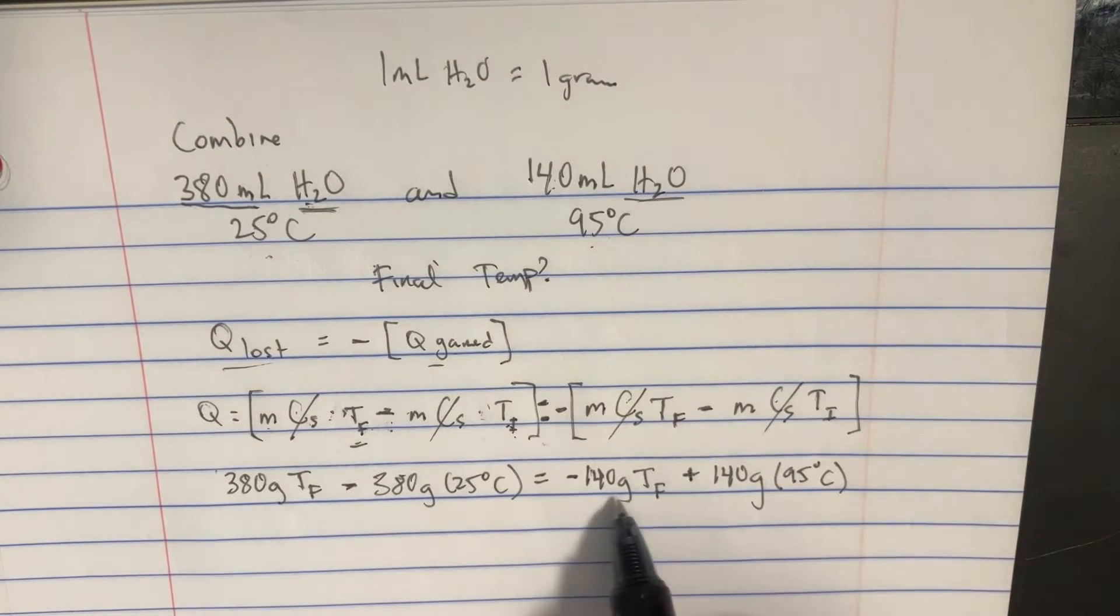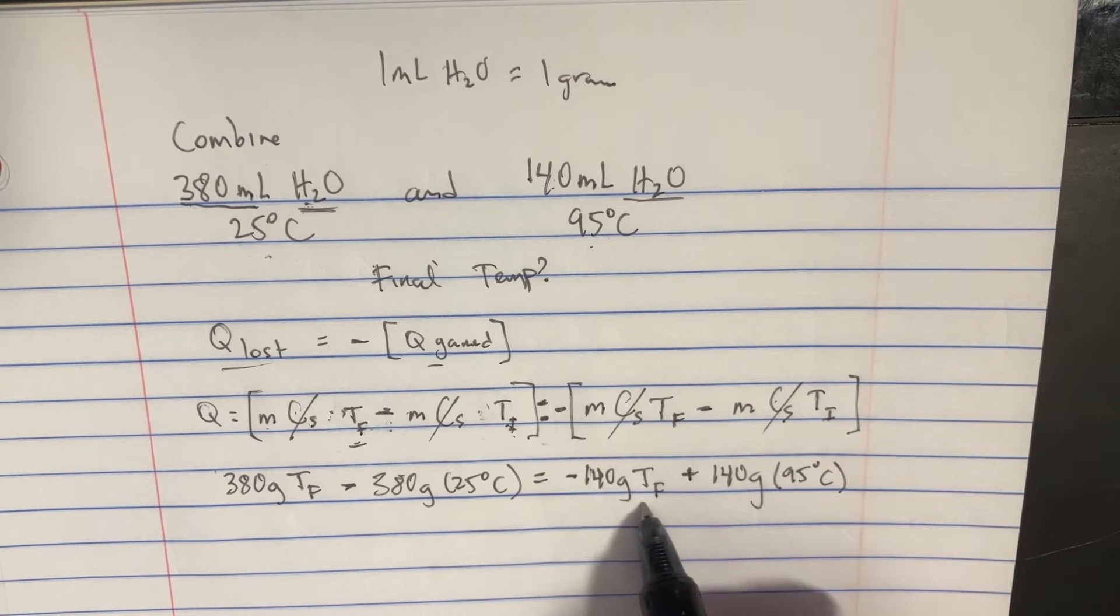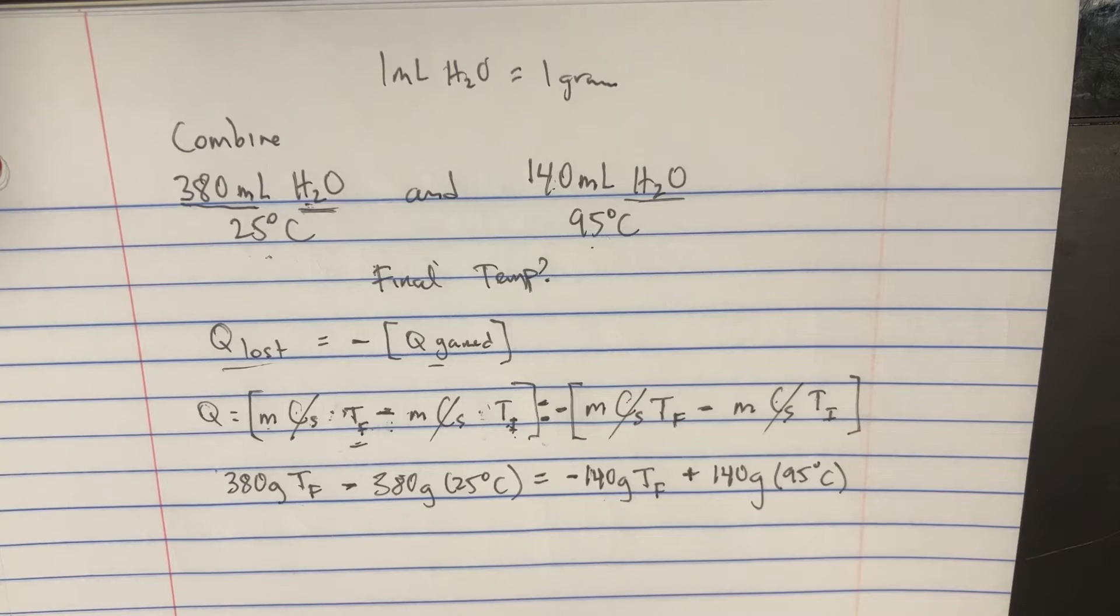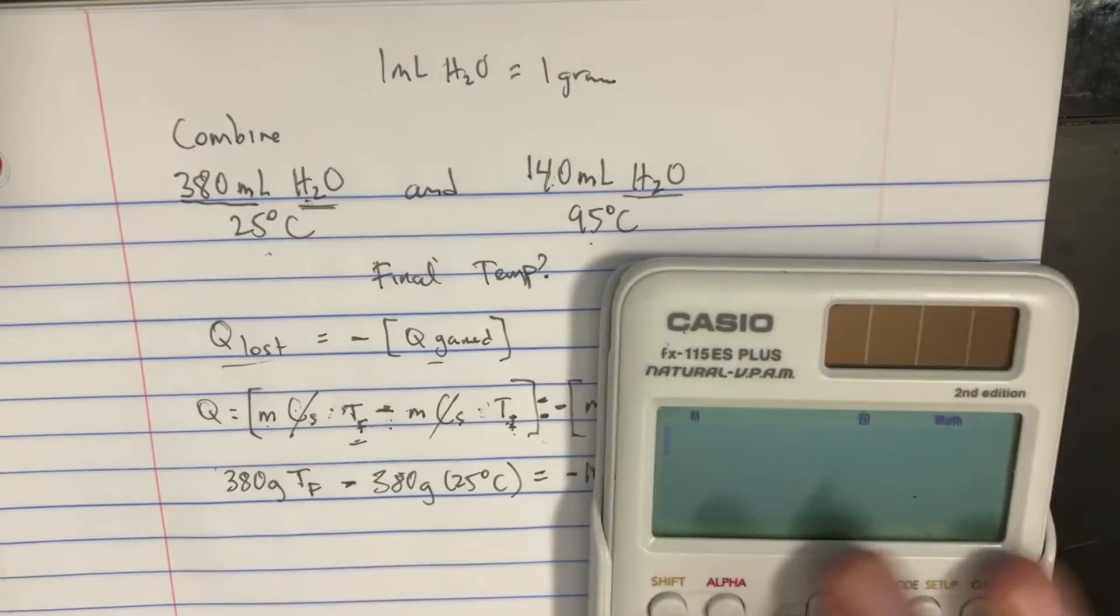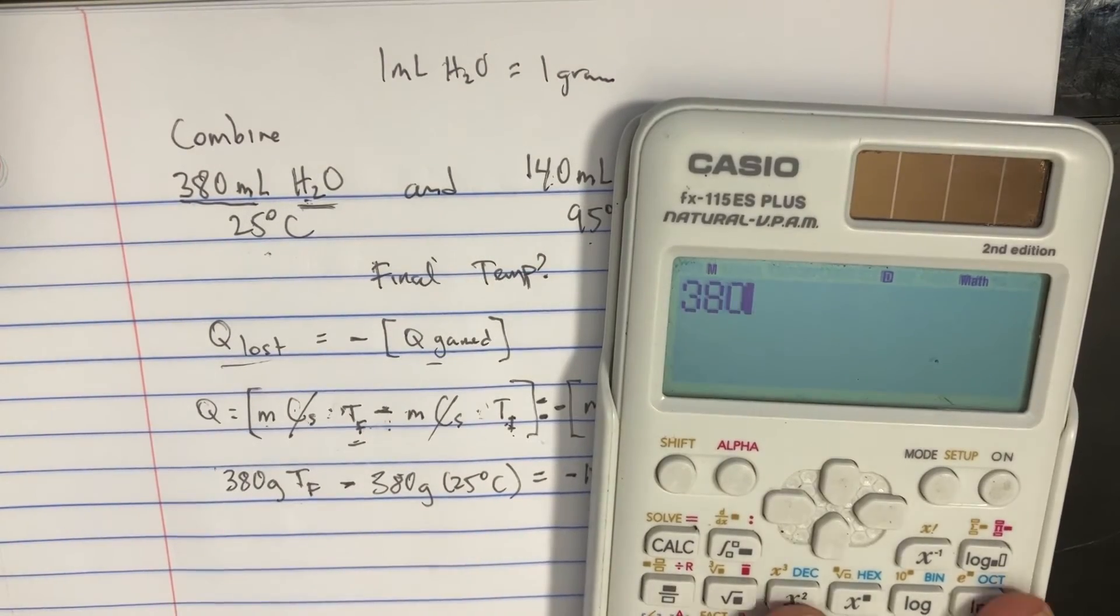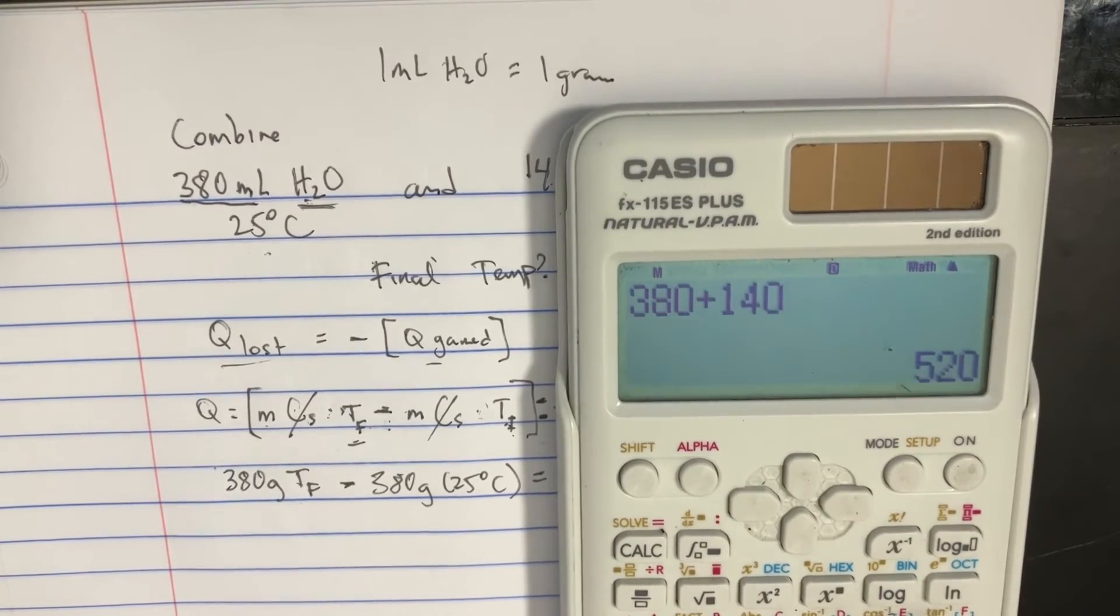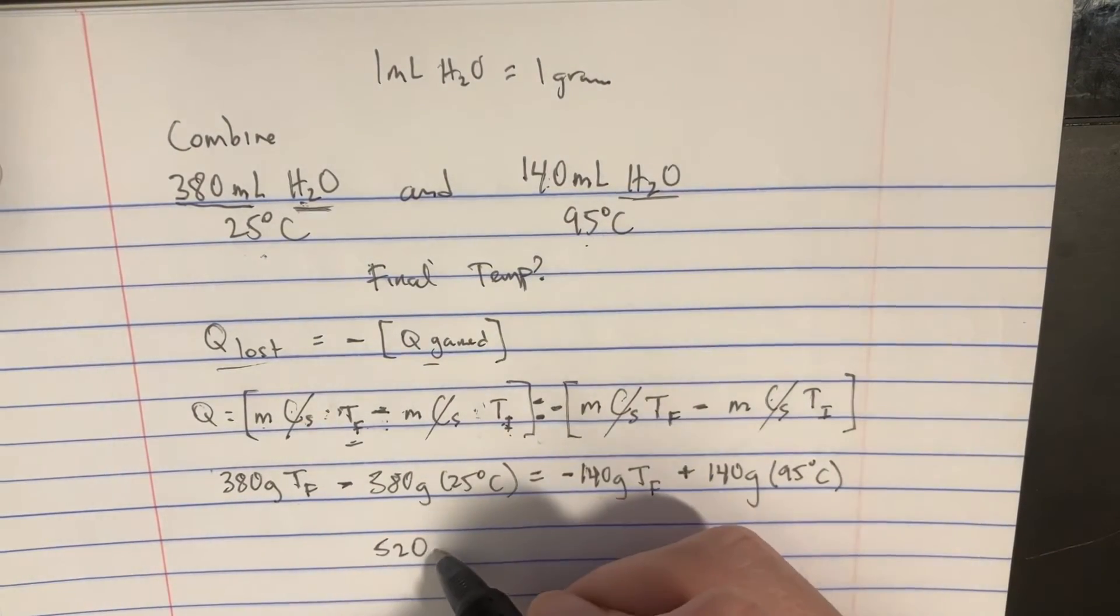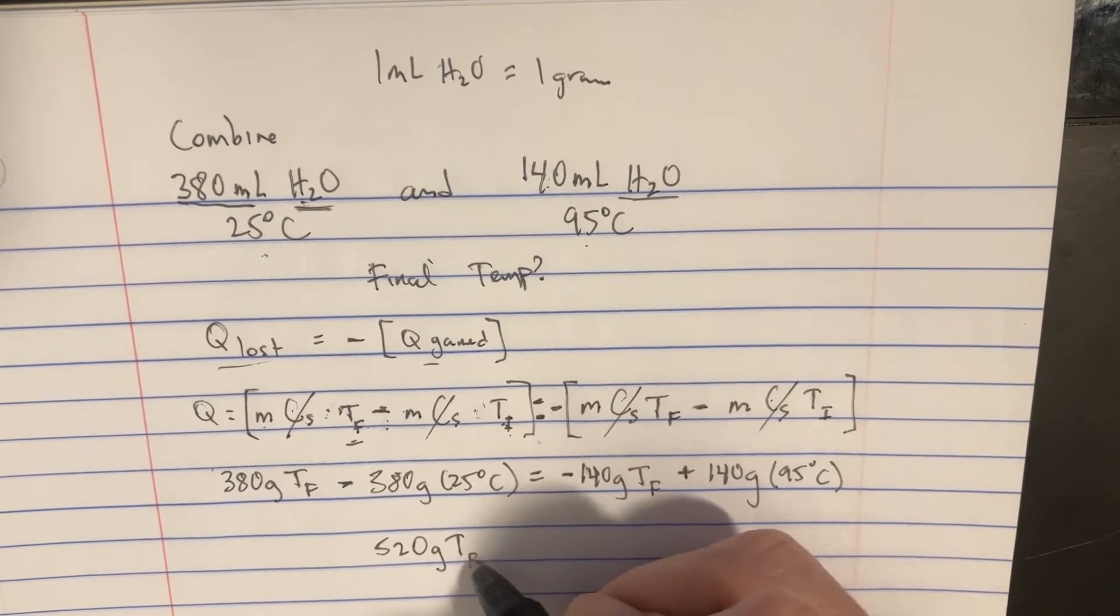So we should be able to kind of rearrange this equation by moving this to the other side, moving that to the other side. Let's figure out what this stuff might be. So 380 plus 140 is 520 on this side. So we have 520 grams and then the final temperature thing.